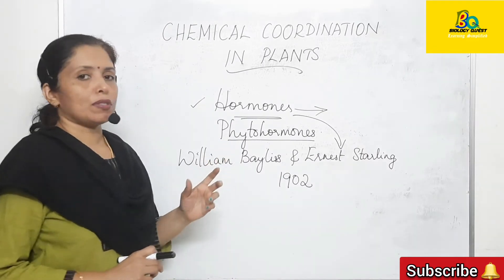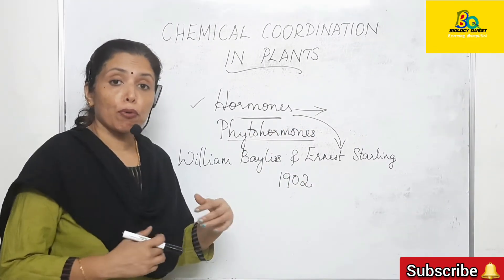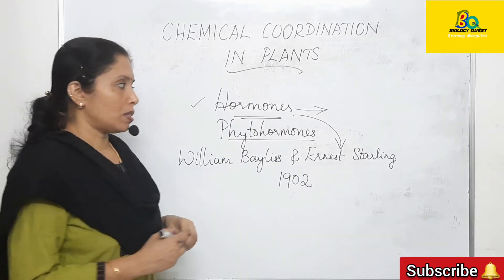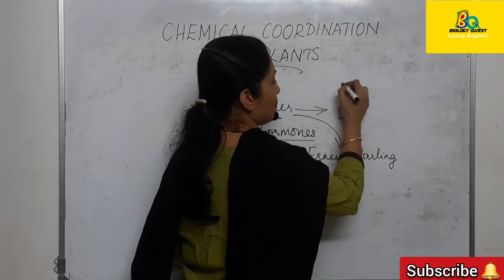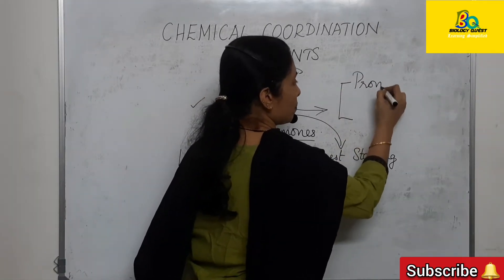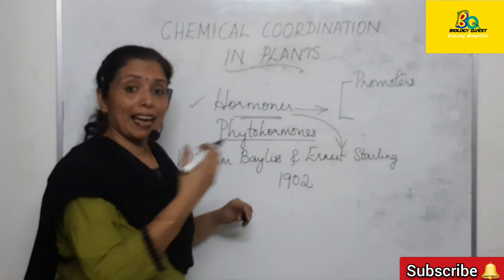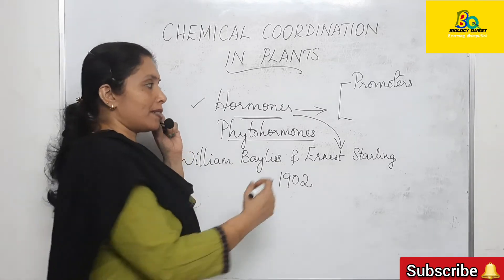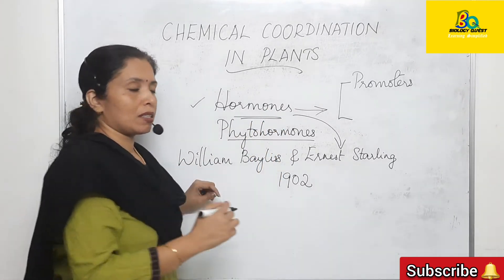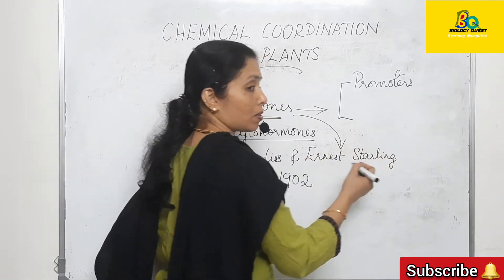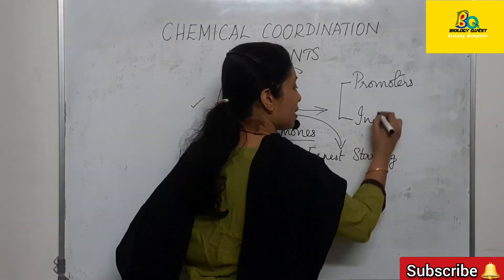Certain hormones can stimulate or promote the growth of the plant — such hormones are called plant growth promoters. Whereas certain other hormones inhibit the growth of the plant, and such phytohormones are called inhibitors.